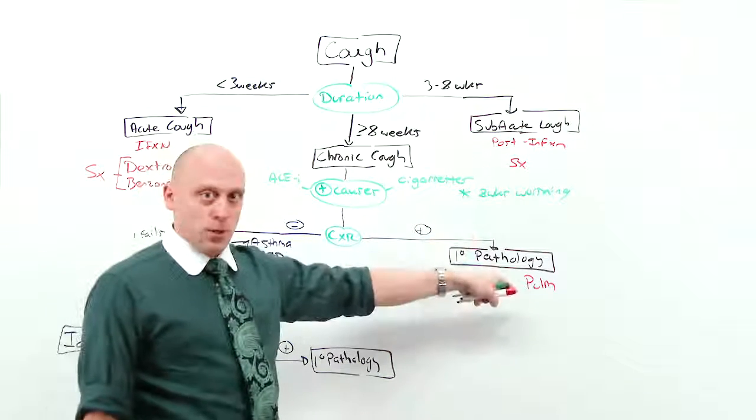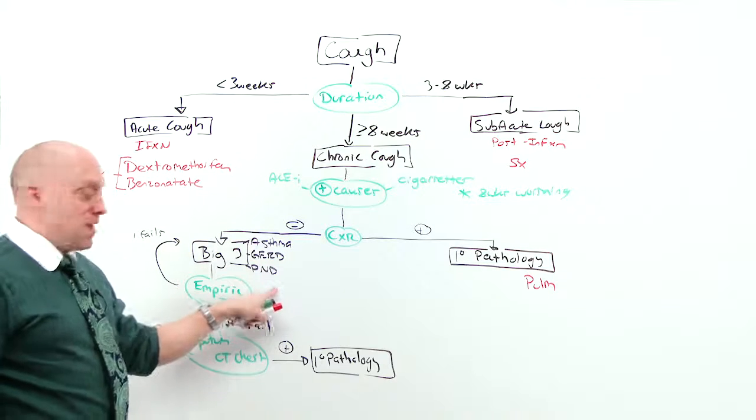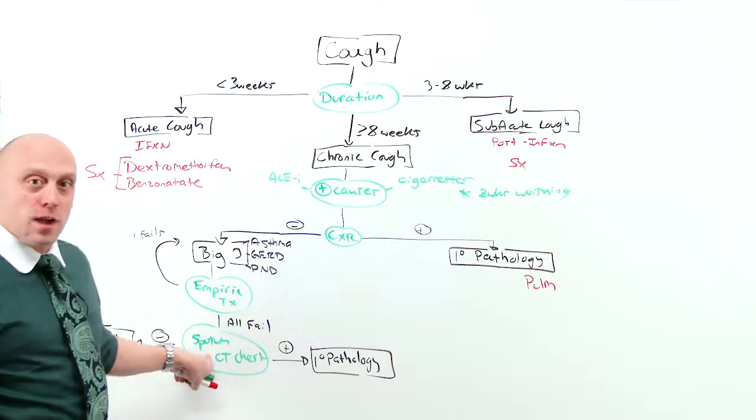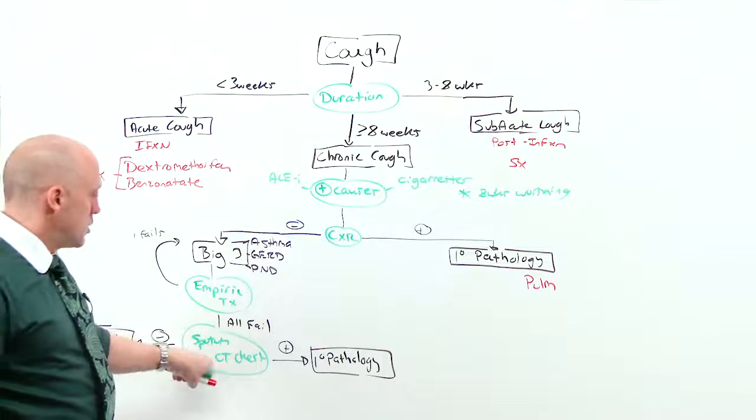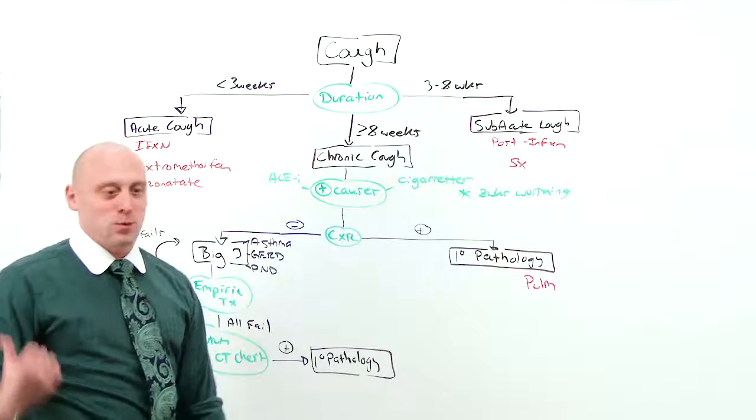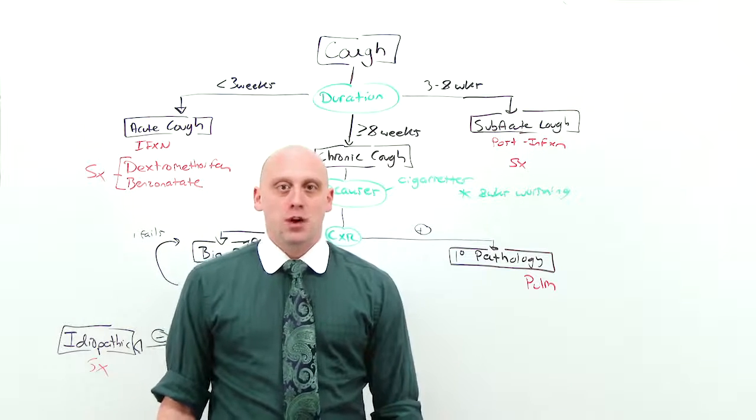If you found it, refer to pulm. If you don't, empirically treat asthma, GERD, and post-nasal drip. If that doesn't work, now you're allowed. You've been doing this for half a year to a year. Now get the sputum in the CT chest. If it's positive, refer to pulm. If it's negative, sorry, keep doing what we've been doing this entire time, treating symptomatically. That's my approach to cough.